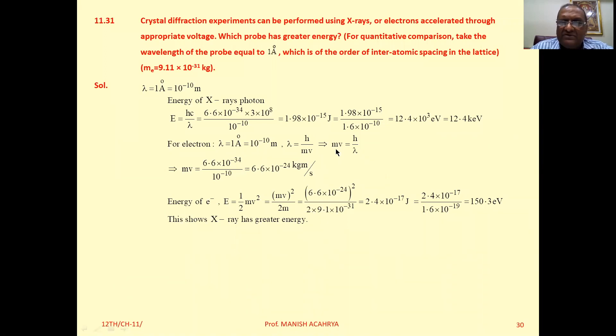Or simply we can write p that is h upon lambda. Okay, now energy of electron that is p square by 2m. So here from this particular equation mv that is h upon lambda, means p that is h upon lambda.